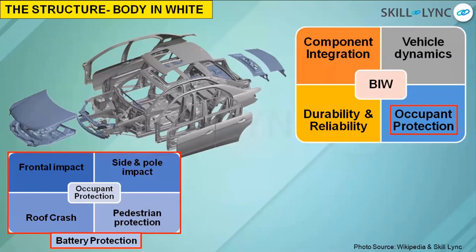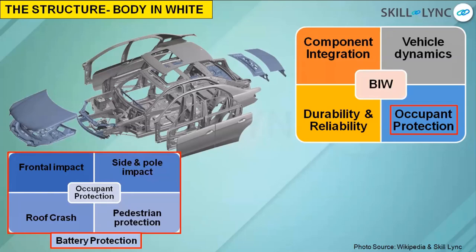Pedestrian protection is also important. If a person was walking on the zebra crossing or jaywalking on the road and the vehicle approaching very fast hits them, the design of the hood should be such that it does not prove fatal for the person being hit. The head injury criteria should be taken into consideration so that the person who is being hit does not suffer fatal injuries — there may be minor injuries, but it should not be fatal.